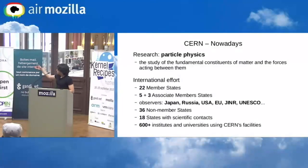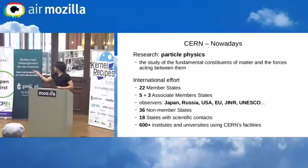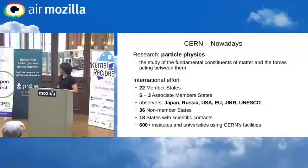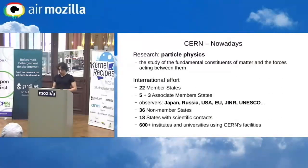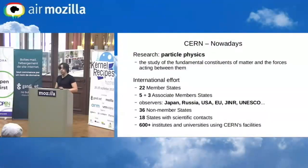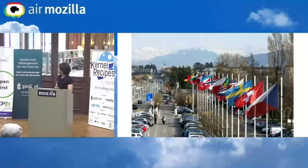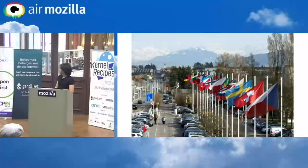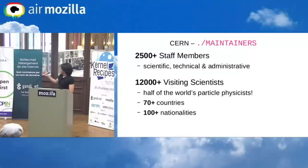There are also five associate member states and larger organizations like the USA, Russia, Japan, the European Union, UNESCO, and many others. Around 600 universities are associated or have contacts to work at CERN. This is the entrance with all the flags.